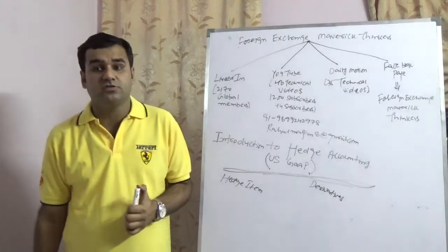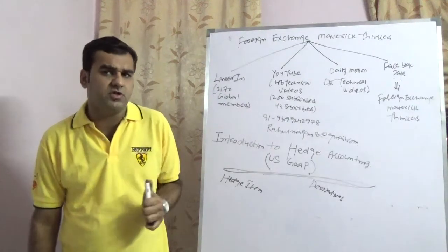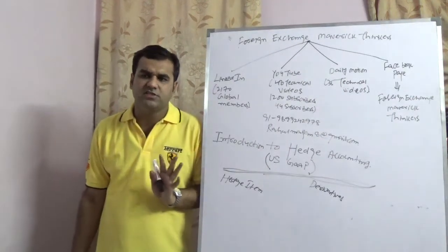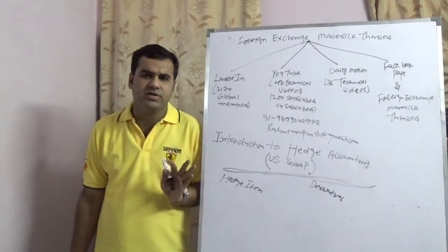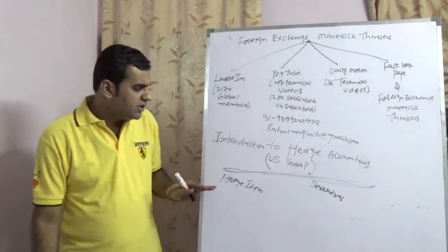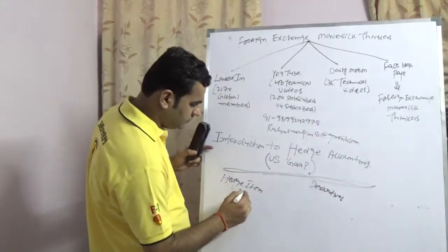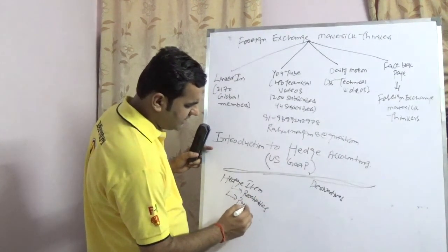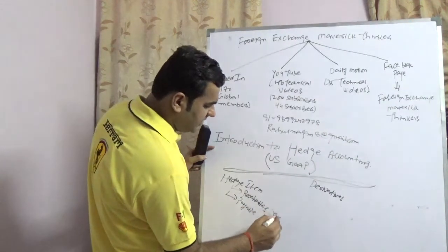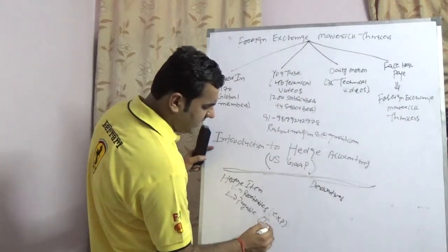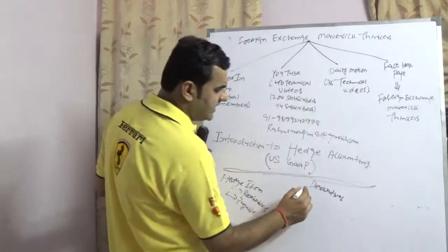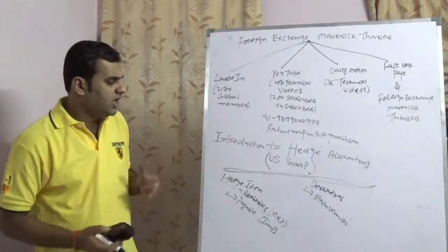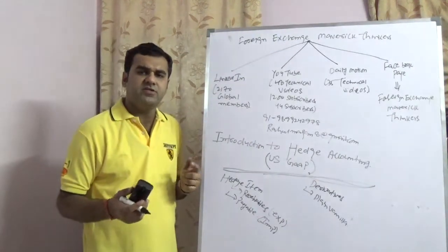As a corporate treasurer, I strongly believe there is nothing known as the exotic side — exotics is nothing but a lack of knowledge. If you don't have the knowledge, everything is exotic to you. In the world of foreign exchange, there is nothing exotic; everything is simple. The hedged item can be categorized as receivables for exporters or payables for importers. Derivatives can be categorized as plain vanilla derivatives or exotics. Hedge accounting can be further categorized into two parts.